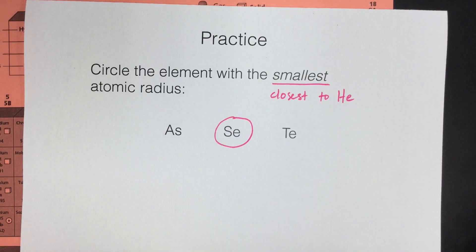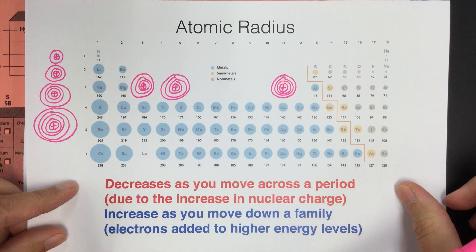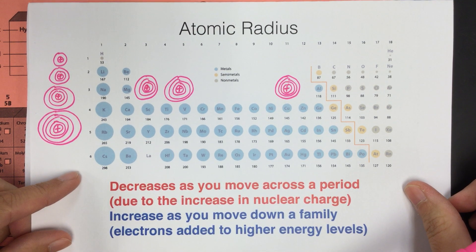That's pretty much it. That is the trend for atomic radius. It can be a little tricky, but as long as you can understand this one, it will really, really help you for the other trends in the future.